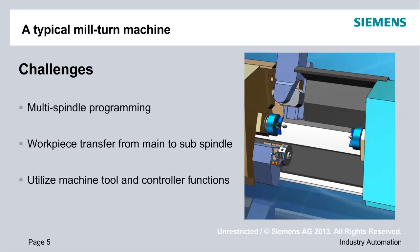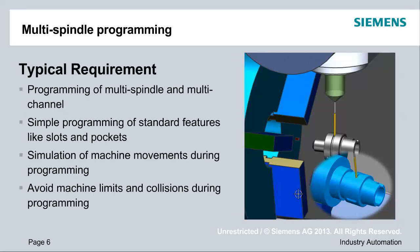In the next couple of minutes, I want to show some PowerPoint slides about some challenges, and for each of these challenges, I have a demo inside NX to show you some pieces of these challenges. For the mil-turn programming on the main and sub-spindle, it's probably two machine channels, where each channel has a tool assigned — in this case one top channel and a turret on the lower channel. I want to talk about the typical requirements for programming of multiple spindles and multiple channels.